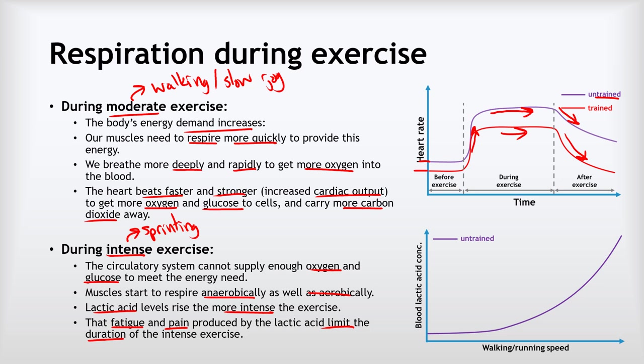Looking at the graph: for an untrained athlete, lactic acid levels remain low during slow exercise but rise quickly as intensity increases, becoming too high and forcing them to ease off or stop. For a trained person, lactic acid levels increase much more slowly as they speed up, because their stronger heart can deliver more oxygen and glucose to cells more quickly, allowing continued aerobic respiration and less anaerobic respiration.